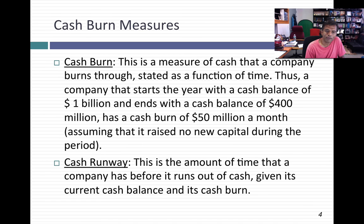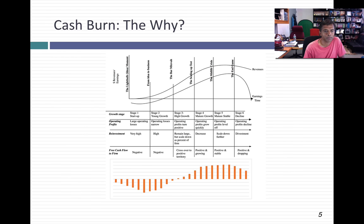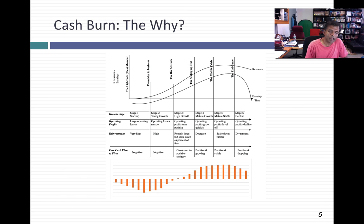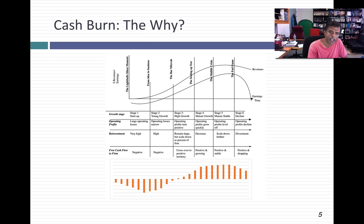So we have a sense of what drives cash burn and how to measure it. Let's think about why it happens. Perhaps the best way is to think in terms of a life cycle. I'm going to first present you with a benign picture of cash burn — benign in the sense that this is what you'd expect a healthy, going concern to look like as it moves through the life cycle. Early in the life cycle, you're a startup firm — you have very little in revenues, perhaps nothing. You're making losses and reinvesting because all your future is in growth. You're going to have big negative cash flows.